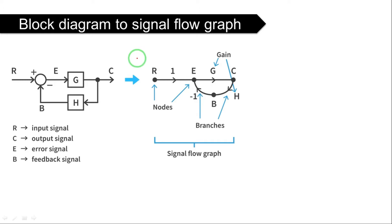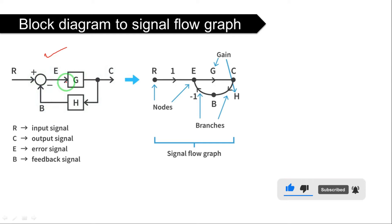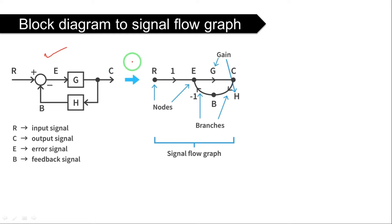See here in the slide — this is a block diagram. A block diagram consists of an input signal, output signal, error signal, and feedback signal. If we have a block, a summing point, and all these components, then how do we draw a signal flow graph for this block diagram? We have to replace the blocks or branches with a single line called a branch.